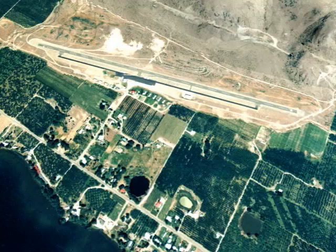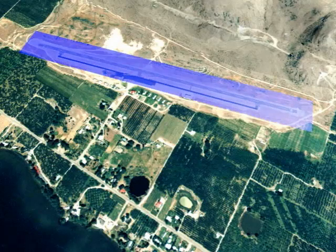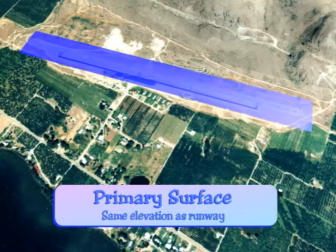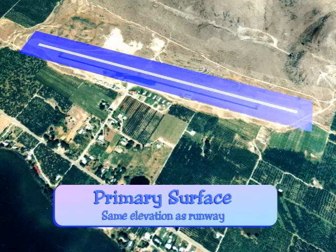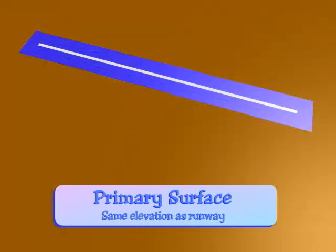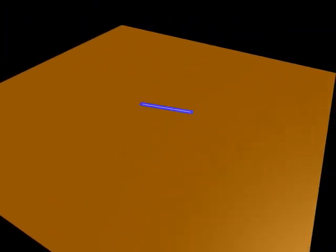The first surface we'll discuss is the primary surface. The primary surface is the only surface which exists solely at ground level. It is centered on the runway, is at the same elevation as the runway, and it extends 200 feet beyond each runway end. The primary surface is to be kept clear of all objects except those that are critical to the operation of aircraft, such as runway lights, signs, or electronic nav aids.